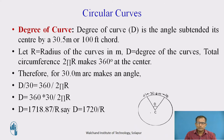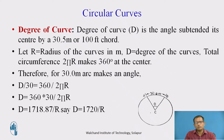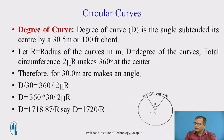In railways, we always define the curve by the degree of the curve or by radius. In roadways, we usually define it by radius, but in railways, because the radius is larger, we always define the curve by degree of the curve, that is D. The degree of the curve is the angle subtended at its center by a 30.5 meter or 100 feet chord. In some textbooks, we take 30 meter chord and in some we take 30.5 meter.